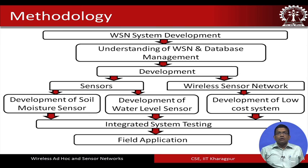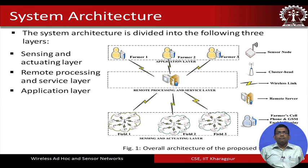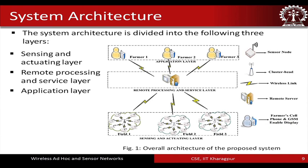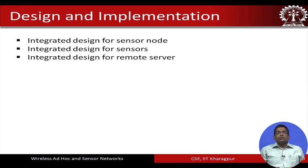The overall system architecture has three layers. At the bottom is the sensing and actuating layer, where sensors and actuators are located. Above that is the remote processing and services layer, which gathers data from sensors remotely, processes them, and offers different services to the higher layer. These services are then used in the application layer by farmers, who receive alert messages on their mobile phones.